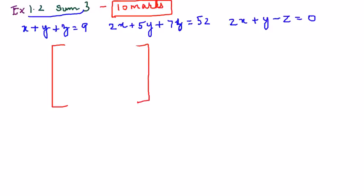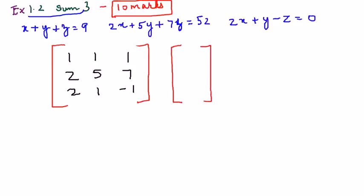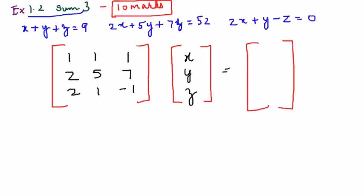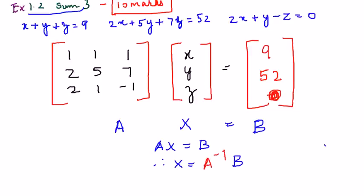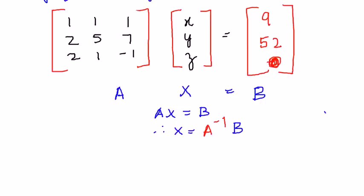We'll write the coefficients of the three equations of x, y, and z: 1, 1, 1 from the first equation; 2, 5, 7 from the second equation; 2, 1, -1 from the third equation. When this matrix is multiplied by x, y, and z, the resultant matrix we get is 9, 52, and 0. We call this matrix A, this matrix X, and the resultant matrix B. Therefore AX = B, so X = A⁻¹B.